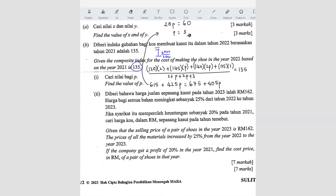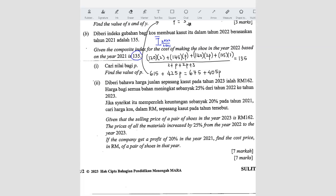Question B2. Given the selling price of the pair of shoes in 2023 — so now there's a new year involved, 2023. All this while we were solving for 2021 and 2022. Now you have 2023. They give you the selling price, and all material prices increased by 25% from 2022 to 2023.